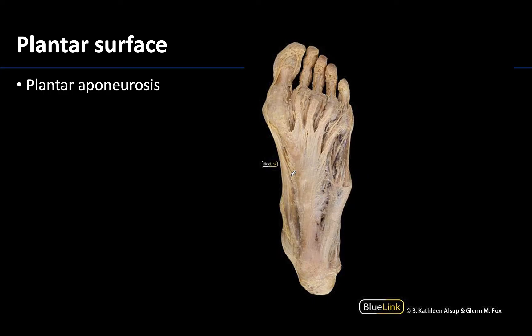The first is the plantar aponeurosis, which is this dominant structure here in the middle of the plantar surface of the foot — the inferior surface of the foot, the part that comes in contact with the ground. As you can see, it is white and opaque and more prominent than the plantar fascia that is medially and laterally located.